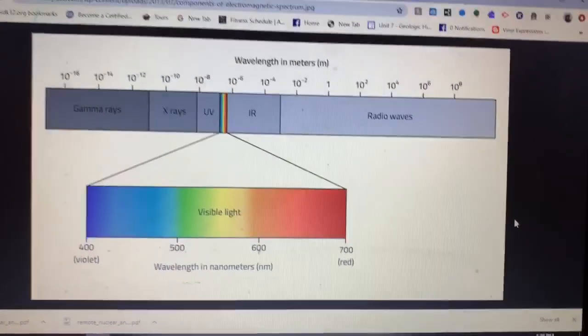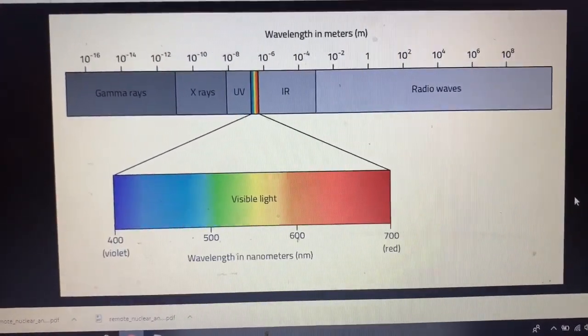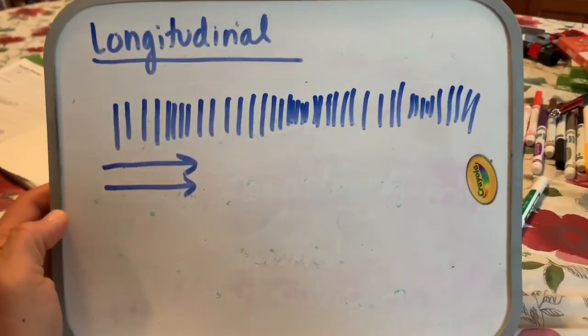So again, these are electromagnetic waves, which are transverse waves. And I'm going to show you how to model those in a couple of minutes using a slinky. So the other type of wave is a longitudinal wave.